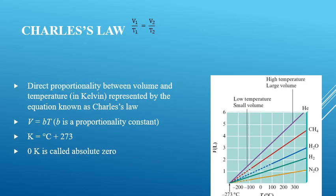Our next gas law is Charles' law, which shows the proportionality between volume and temperature at constant pressure and number of particles. Instead of being inversely proportional, we now have a direct proportion. From a mathematical standpoint, whenever you have your variables being divided — V₁/T₁ = V₂/T₂ — that tells you they are directly proportional. So as one goes up, the other goes up to keep their proportionality the same. If they're inversely proportional, as one goes up, the other must go down.